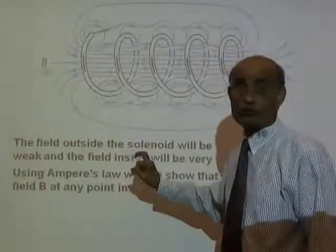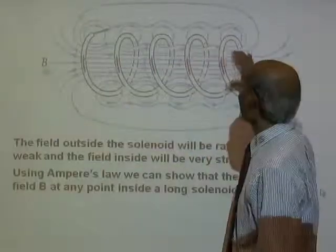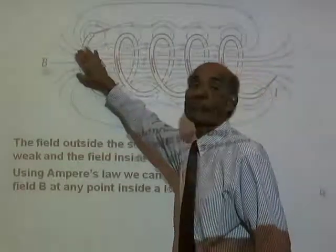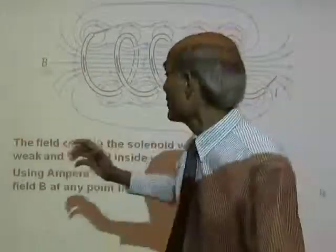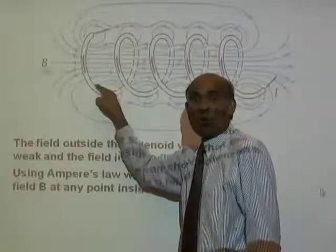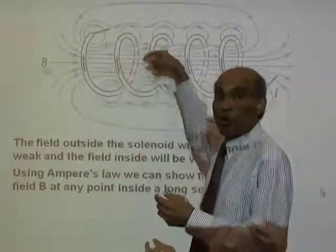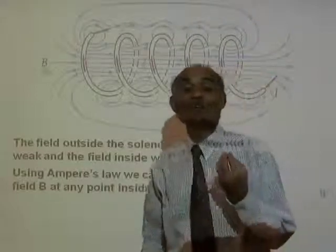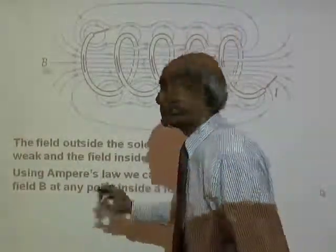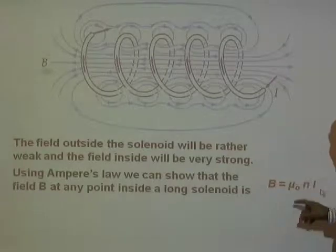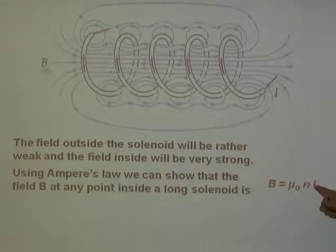Using Ampere's rule, we can obtain an expression for the magnetic field at any point inside a solenoid. The sum of all B parallel times dL around the closed loop must equal mu_0 times I enclosed. Applying this, it can be shown that the magnetic field at any point inside the solenoid is B equals mu_0 n I, where lowercase n is the number of turns per unit length.